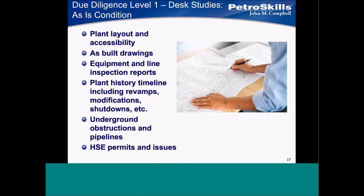Then what we call as-is condition: plant layout and accessibility, as-built drawings, equipment and line inspection reports, plant history timeline — including revamps, modifications, shutdowns, underground obstructions, permits and issues. You want to know the operational history of the facility, and when you go out there, what are you going to find? Do you have good drawings? Is it accessible? Can you get into it?